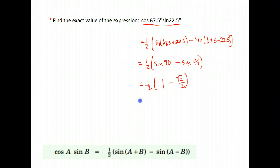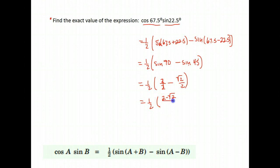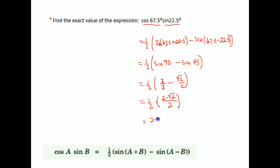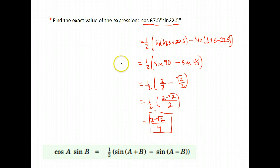We need to simplify by getting a common denominator. One needs a denominator of 2, so 1 is equivalent to 2 over 2. Now with a common denominator, that gives us 2 minus the square root of 2, all over 2. Then we multiply: one-half times that fraction gives us 2 minus the square root of 2 in the numerator, and 2 times 2 in the denominator gives us 4. So the exact value of cosine 67.5 times sine 22.5 is (2 minus root 2) over 4.